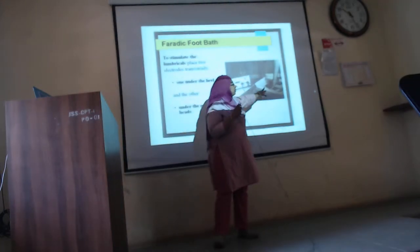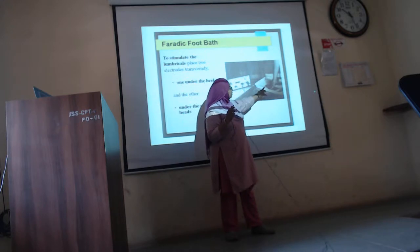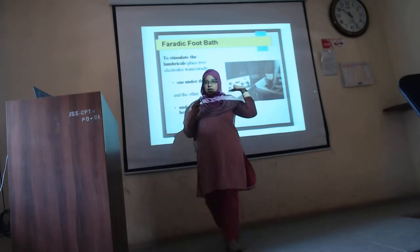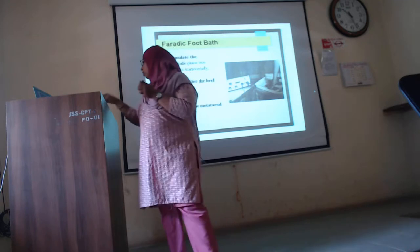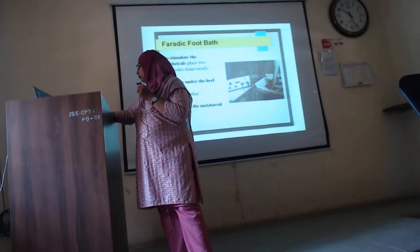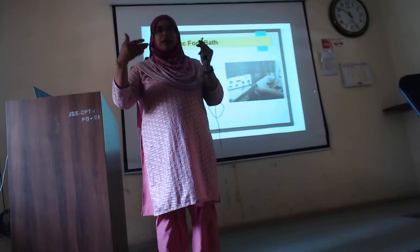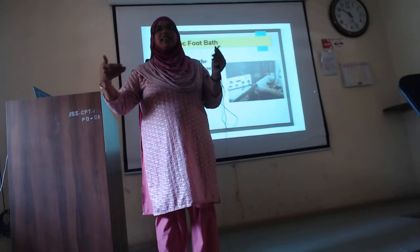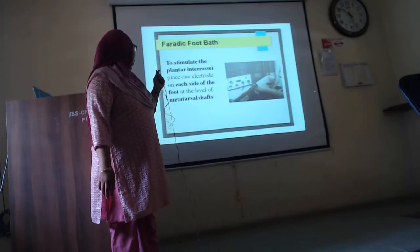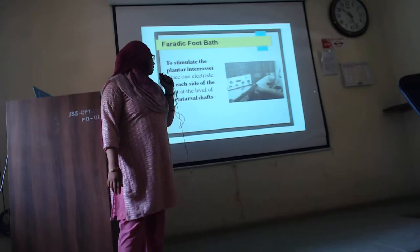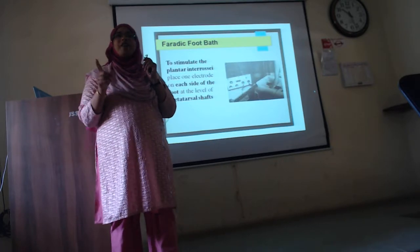The electrodes are long — approximately seven centimeters in length and three centimeters wide — generally used for the faradic foot bath. For stimulation of the plantar interossei, the electrode placement changes completely. They are kept under the metatarsal heads on either side of the foot. One electrode is placed on each side of the foot at the level of the metatarsal shafts. For this you have to remember the anatomy.